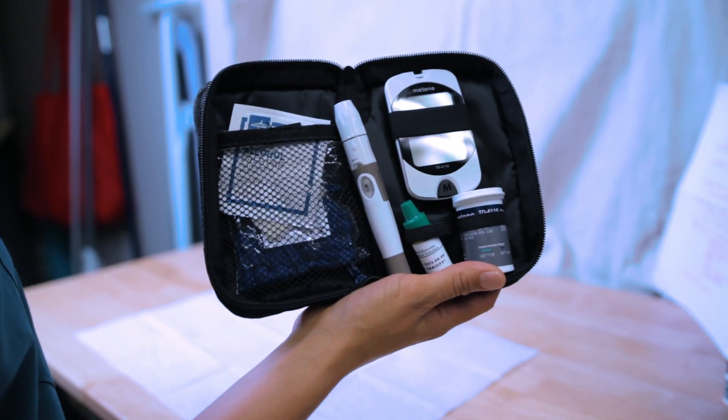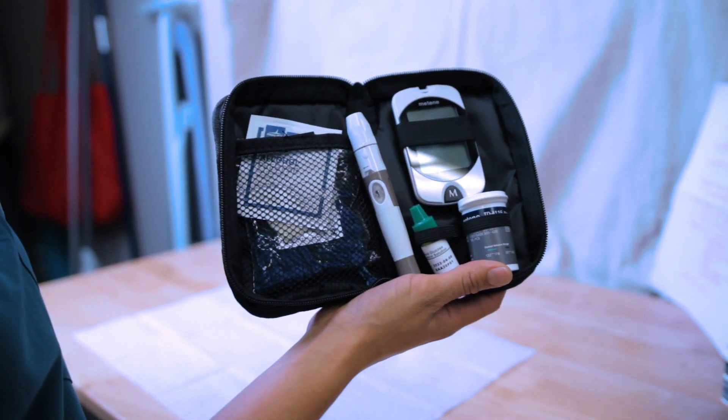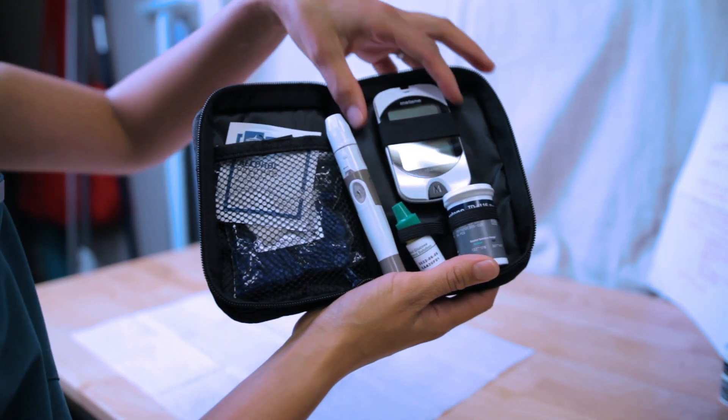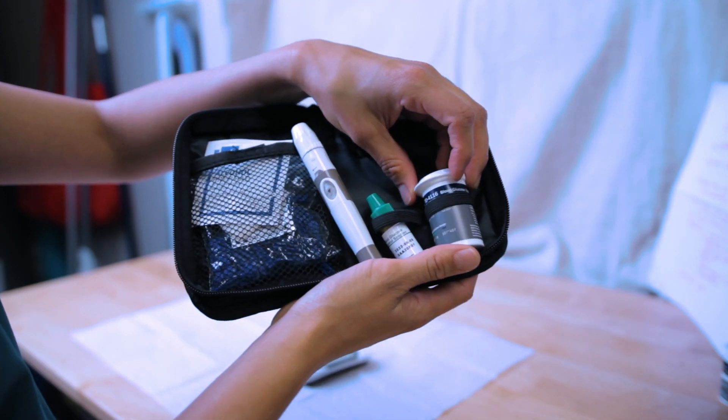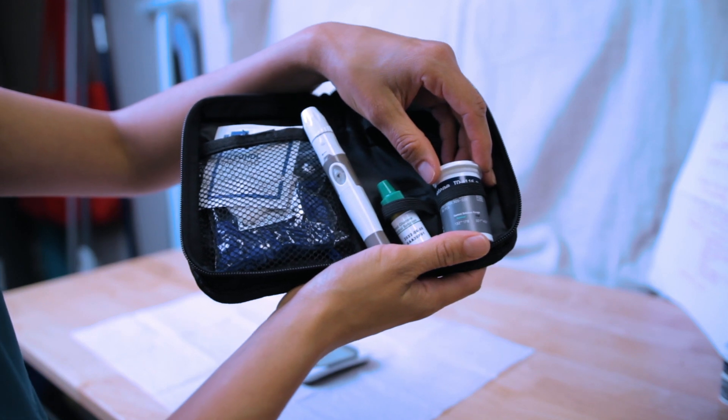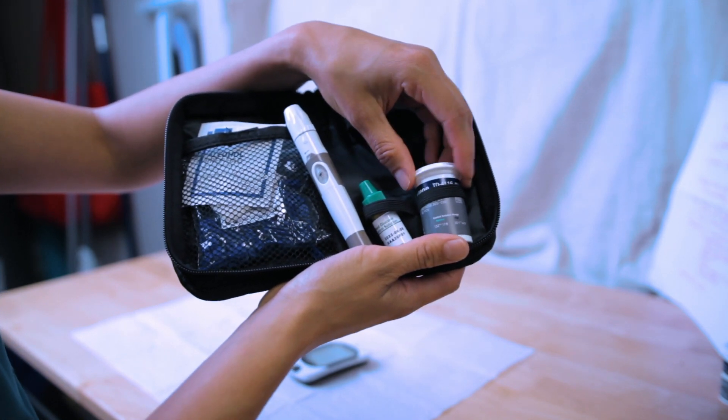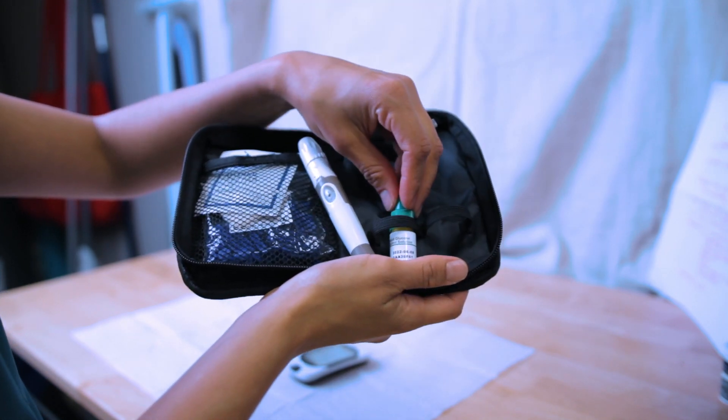Here is your basic home glucometer. In this bag you have your glucometer strips, which you want to make sure you check the expiration date. Once it's open, it's only good for four months. You have your blood glucose